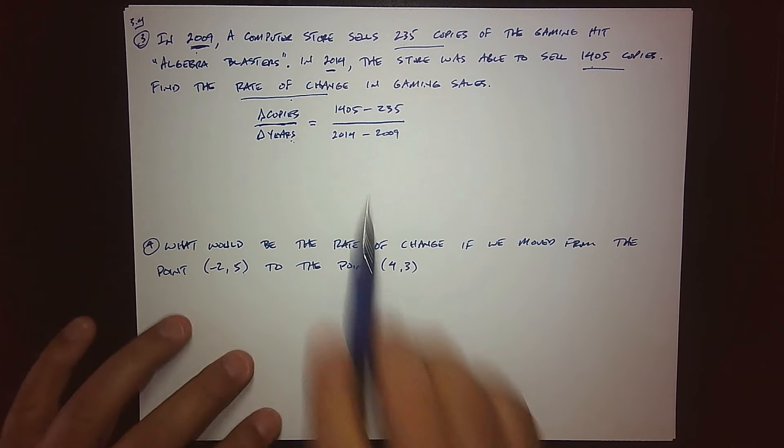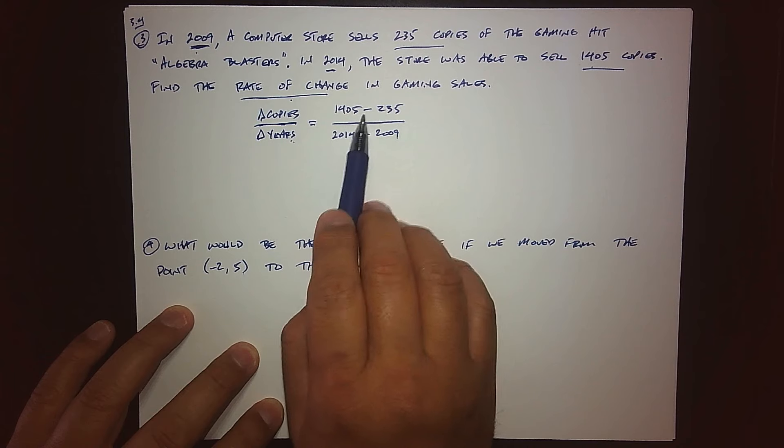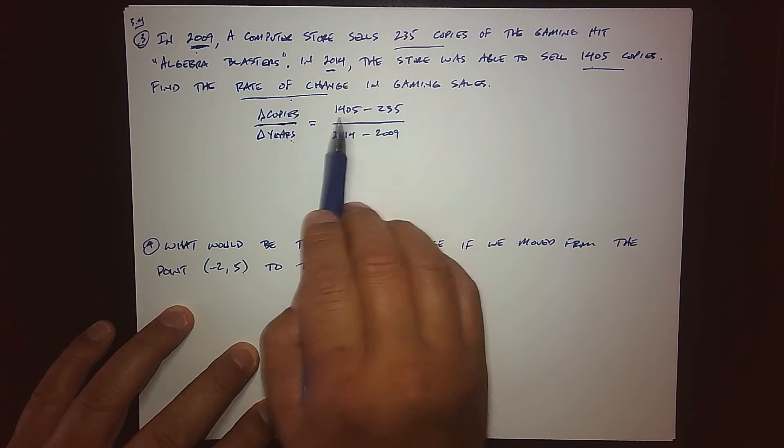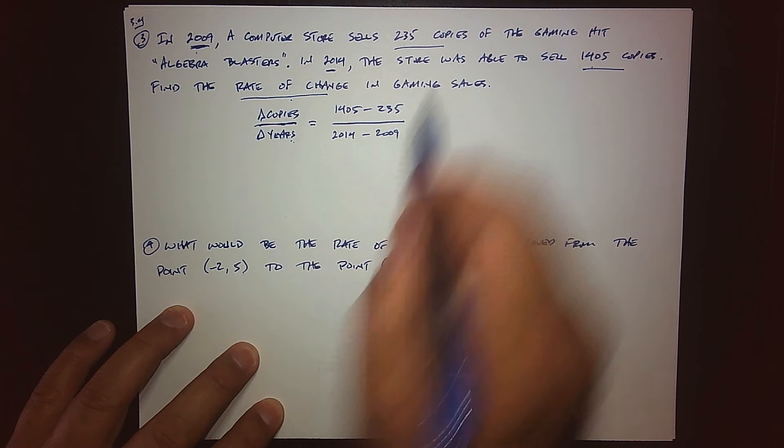So what was the overall change from 235 to 1,405? Well, if you think about it, what we have to do is perform a subtraction. We started with this many and ended with this many. So how much change did we have? It's basically the difference between those numbers of copies. How about the change in years? Well, same idea. I think this is a little easier to see.